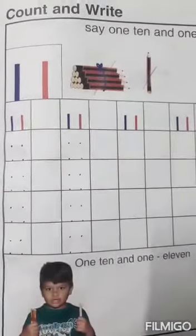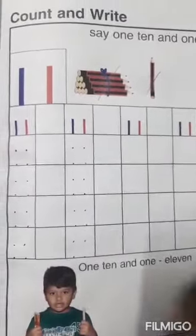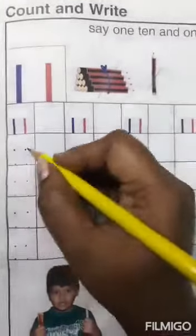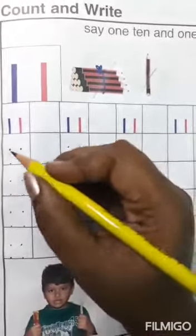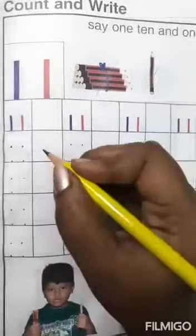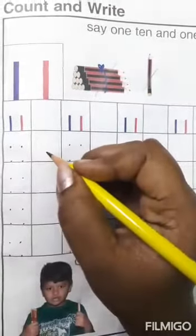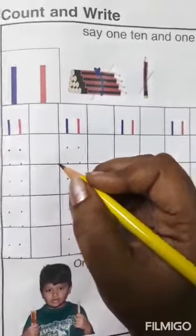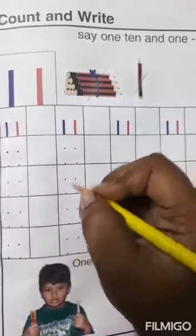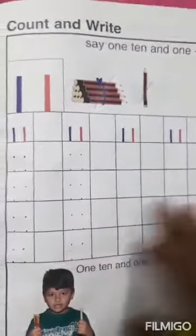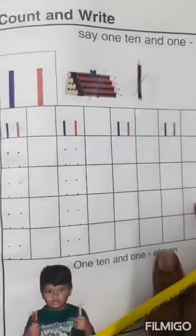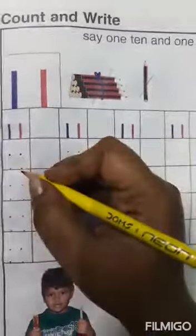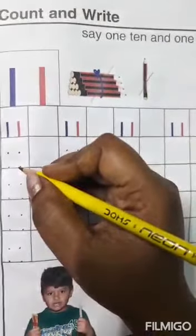Children, now we will learn how to write number 11 with the help of these dots. First, hold your pencil properly, tightly. Okay children. And I request all the parents to kindly put the dots and guide your child to write neatly. Now, observe carefully children, and repeat after teacher.